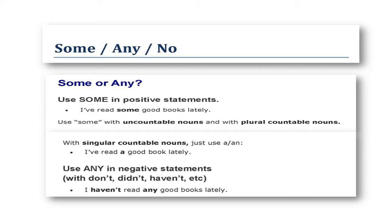Some, any, and no. Some or any: use some in positive statements. I've read some good books lately. Use some with uncountable nouns and with plural countable nouns. With singular countable nouns, just use a or an. I've read a good book lately.